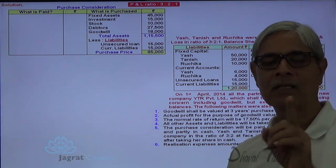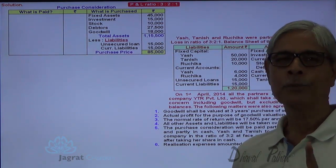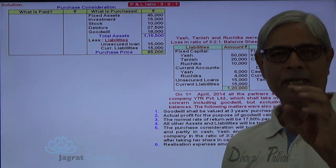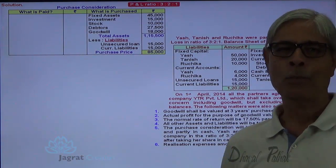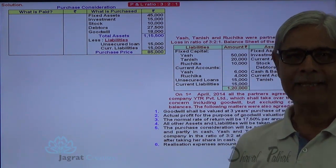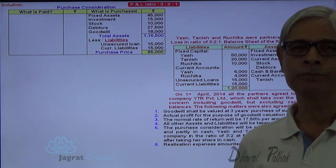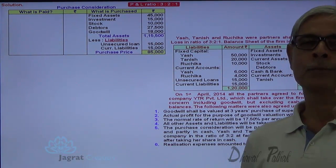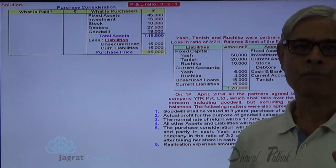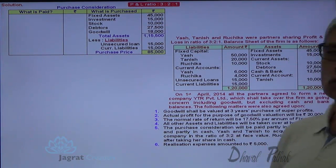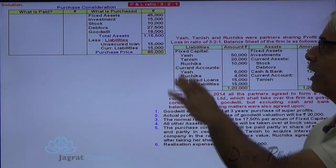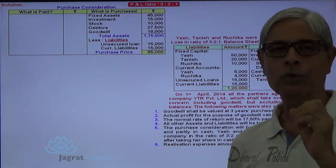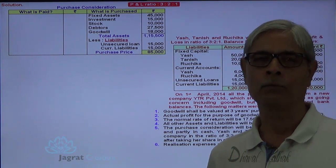The purchase price will be received partly in cash and partly in equity shares. To find what part is paid in cash, I need to determine the amount to be paid to Ruchika in cash. To do that, I need to prepare the realization account first. Profit or loss on realization will be distributed amongst partners, and then Ruchika will be paid cash, taking into consideration the cash and bank balance that was not sold. Now let me start preparing the realization account, capital accounts, and the new company account.